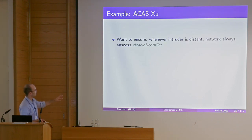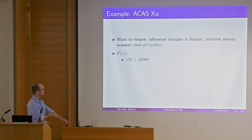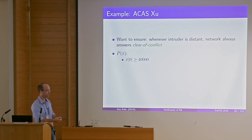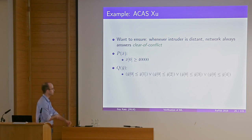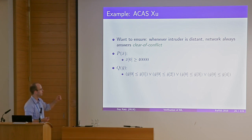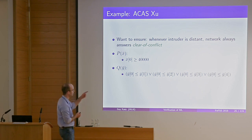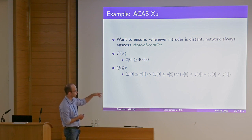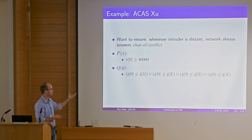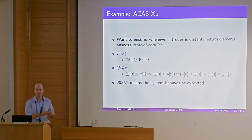For example: if the intruder is distant, the network always answers clear of conflict. The input property P would state that the first entry of the input vector — the distance to the intruder — is greater than some constant. The output property Q (checking the negation) asks whether it's possible that any of the other advisories — weak right, strong right, weak left, or strong left — got a higher score than clear of conflict. Unsat means the system behaves well; sat gives us a counterexample.